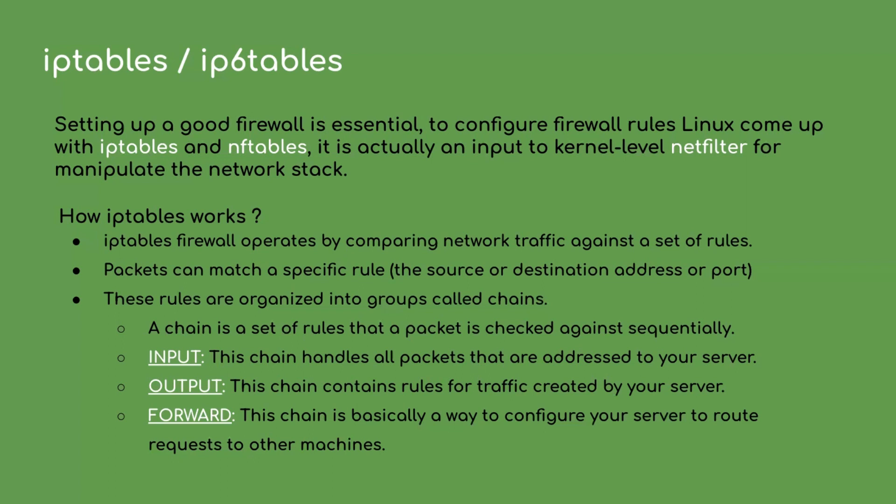A chain is a set of rules that a packet is checked against sequentially. Once a packet matches one of the rules, it executes the associated action — either drop or accept — and will not check the remaining rules in the chain. By default, IPtables comes with three chains: input, output, and forward. Input chain handles all packets addressed to your server. Output chain contains rules for traffic created by your server. Forward chain is for routing requests to other machines.